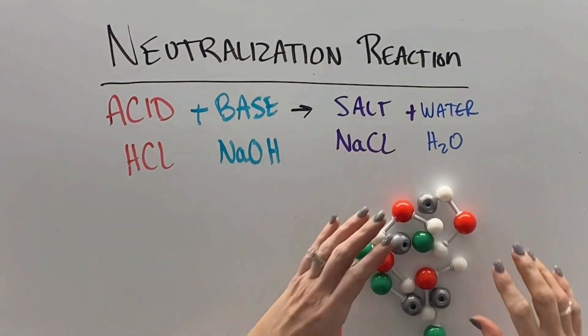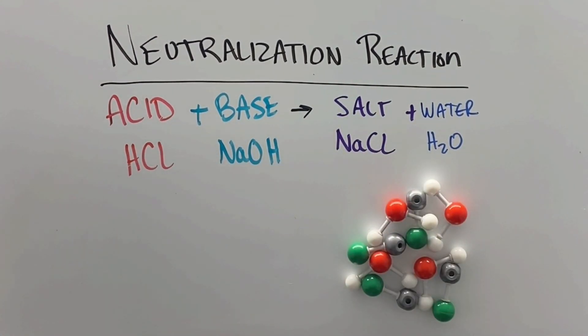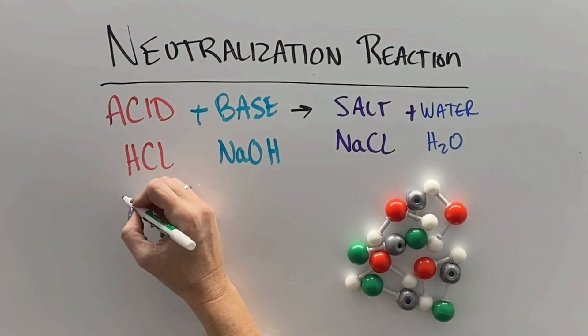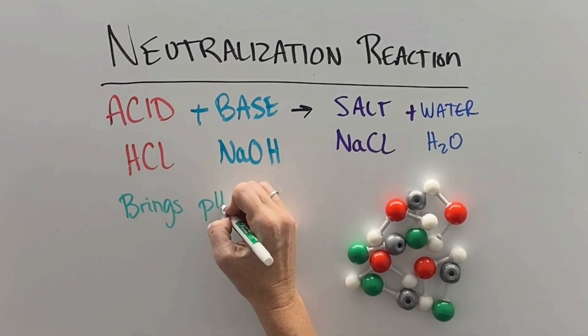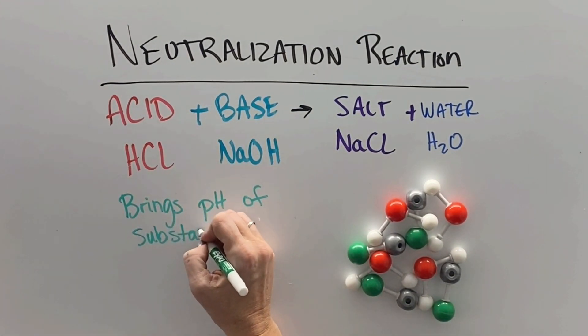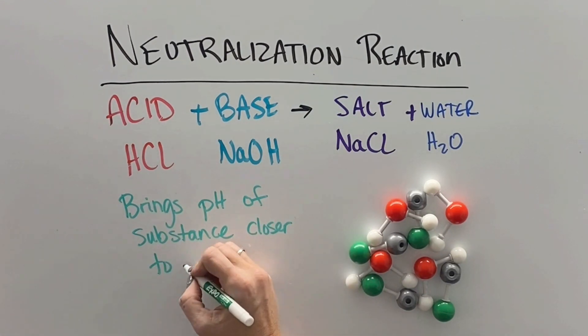These substances will exist together in a solution at the end, made of different substances—salt and water—than we started with. It also brings the pH much closer to neutral 7, compared to the acid which was very low pH and the base which was very high pH.